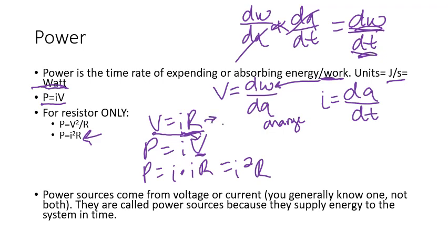Alternatively, I could have rearranged Ohm's law to say current equals voltage over resistance. So when I plug that into P equals IV, I'm going to plug that in in place of current. So P now equals V over R times V. That just equals V squared over R. So power also equals the voltage drop over the resistor squared over R. Should all get you the same value.